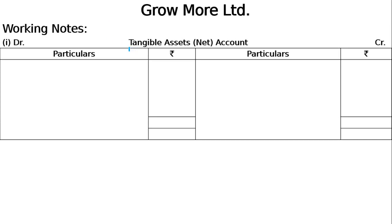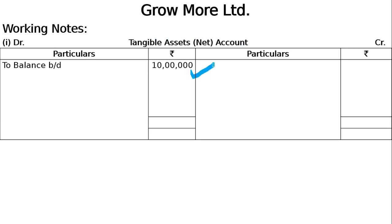We can write tangible assets here - tangible assets plant and machinery account or plant and machinery account. So we do machinery account: opening balance 10 lakhs and closing balance 14 lakhs. This is the machinery account.